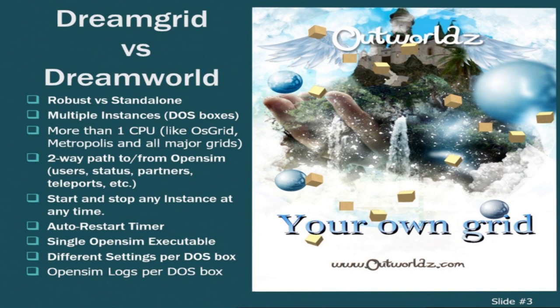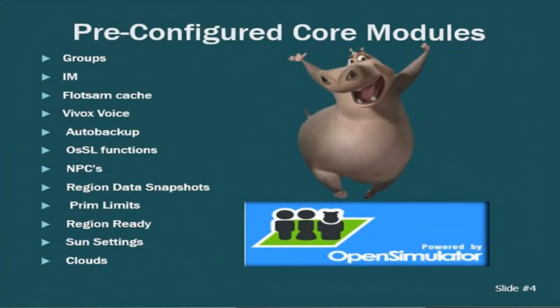The pre-configured core modules include things like Voice, IM, and the Flotsam cache. I've also dug through the code and tried to add things that aren't commonly done — things like OSL functions set up in a sane manner so they'll work for things like Anya Kiva's dance ball NPCs. Safe modes, but a little less strict than core. I also include the auto backup module, region data snapshots, prim limits, region ready modules, and lesser-known ones like sun settings where you can control your own sun and use the old-fashioned particle clouds.